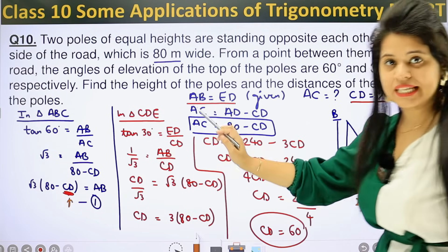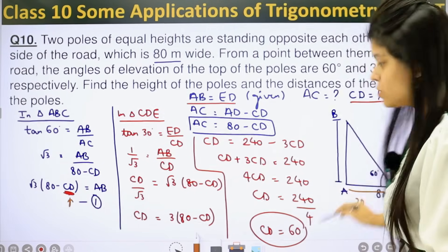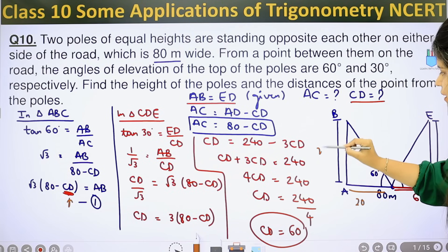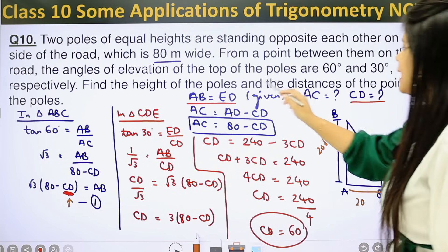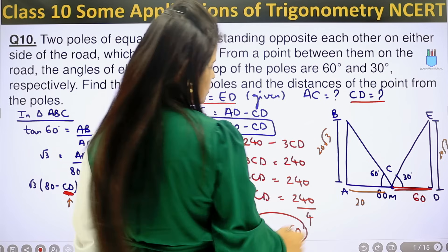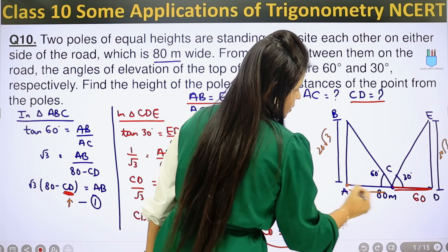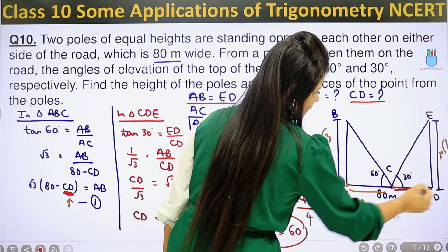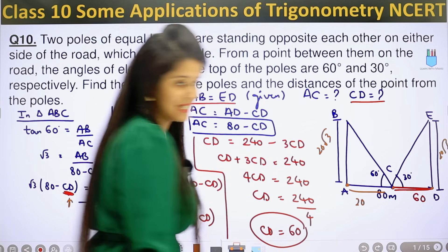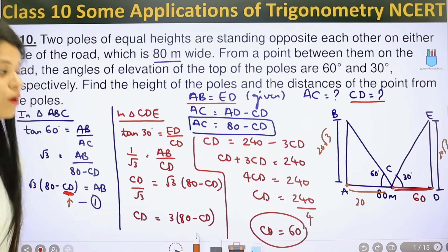Now let's check the question once more. Find the height of the poles - we found both heights are 20 root 3. And the distance of the point from the poles - from this pole the distance is 20, and from that pole the distance is 60. We have found everything.